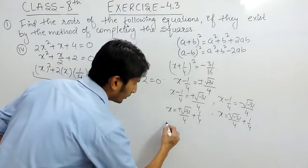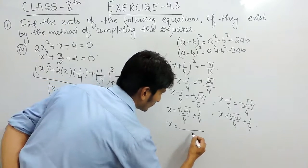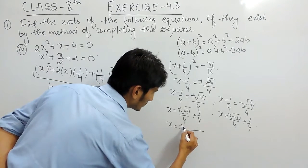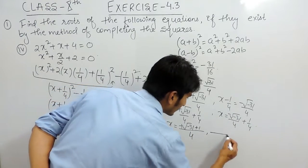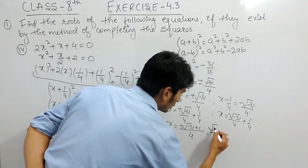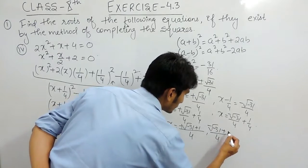So taking 4 as LCM so 4 so this will be minus root 31 minus 1 upon 4 and clearly the other value must be minus root 31 minus 1 upon 4.